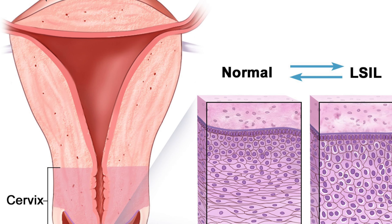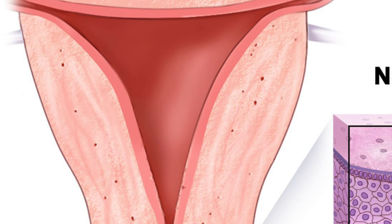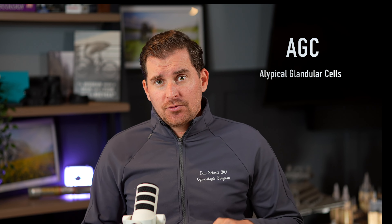Another less common finding is atypical glandular cells. These glandular cells usually reside higher up in the cervix and uterus. We're detecting them on the pap smear scraping and want to investigate further. This finding is generally seen in populations older than 40 or after menopause. We evaluate not only with colposcopy but also higher up using an ECC — scraping into the cervical canal — or an endometrial biopsy. It's a rare finding, occurring in less than 1% of cytology results.